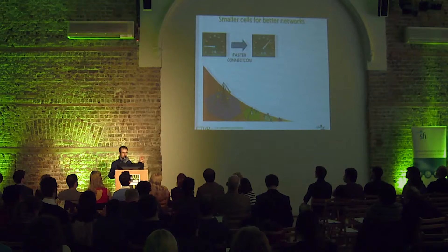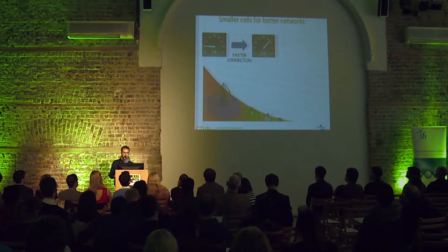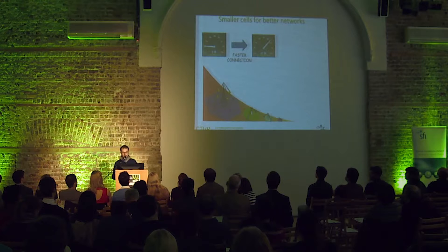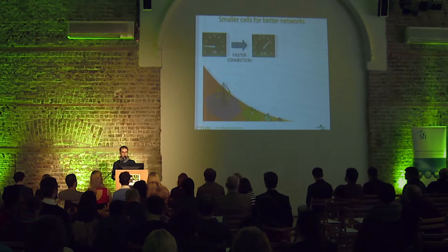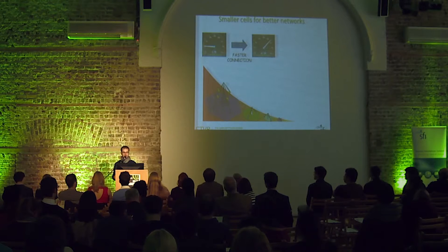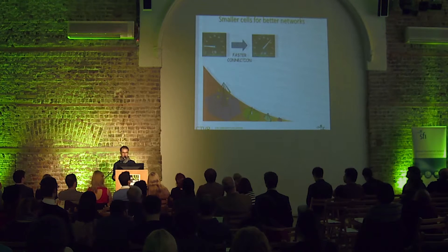Just to give you an example, I'm using this model to predict the connection speed and the power consumption of future networks, which will be made of course of small but many cells. It turns out that future networks will be much faster than current networks — we are talking about a hundred, even a thousand times faster. And also they will consume much less electrical and magnetic power than current networks.